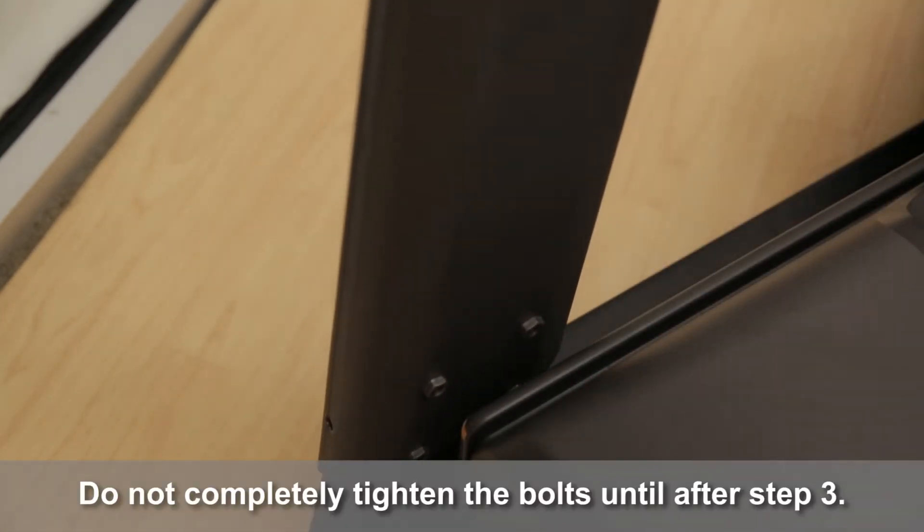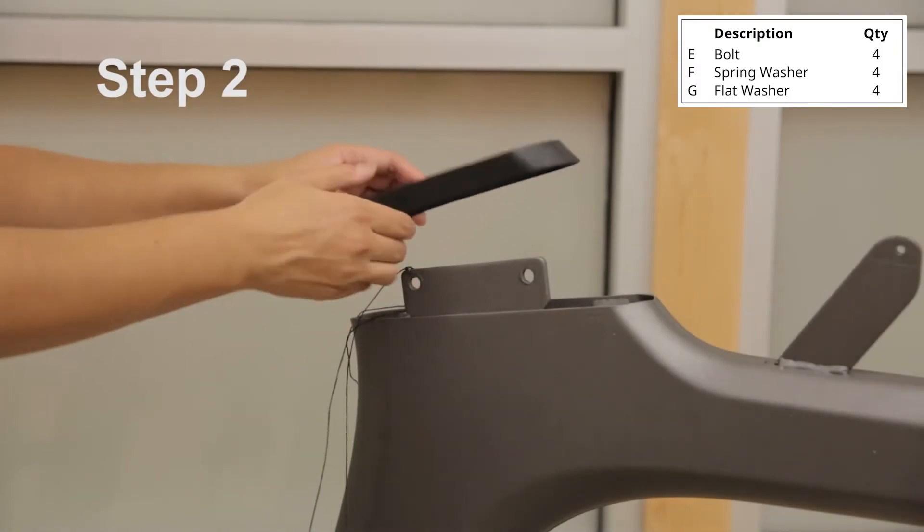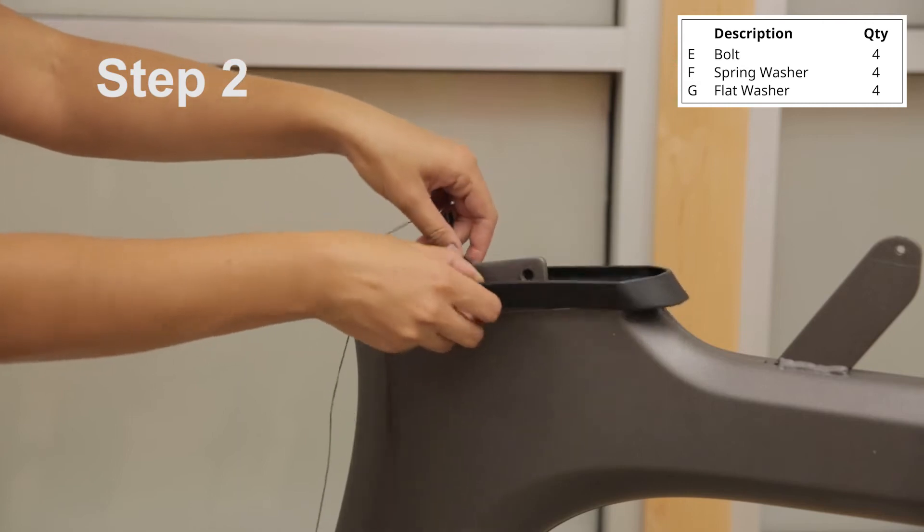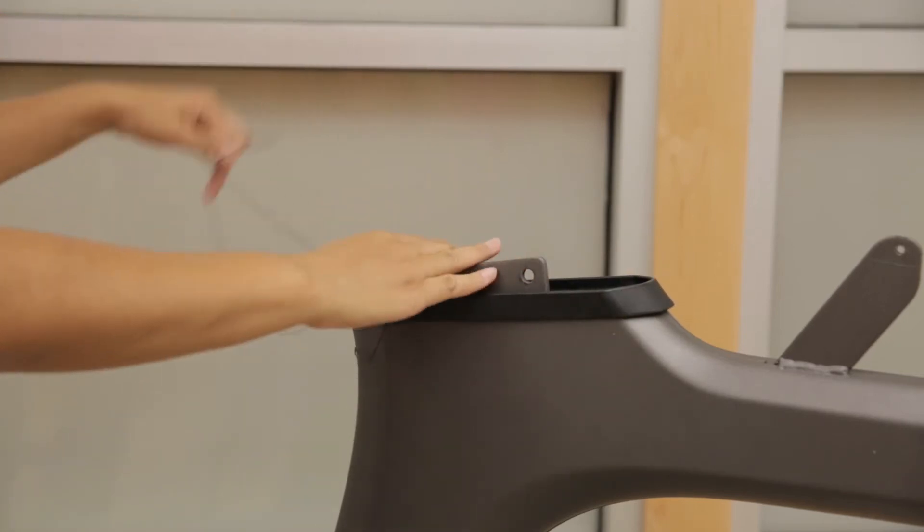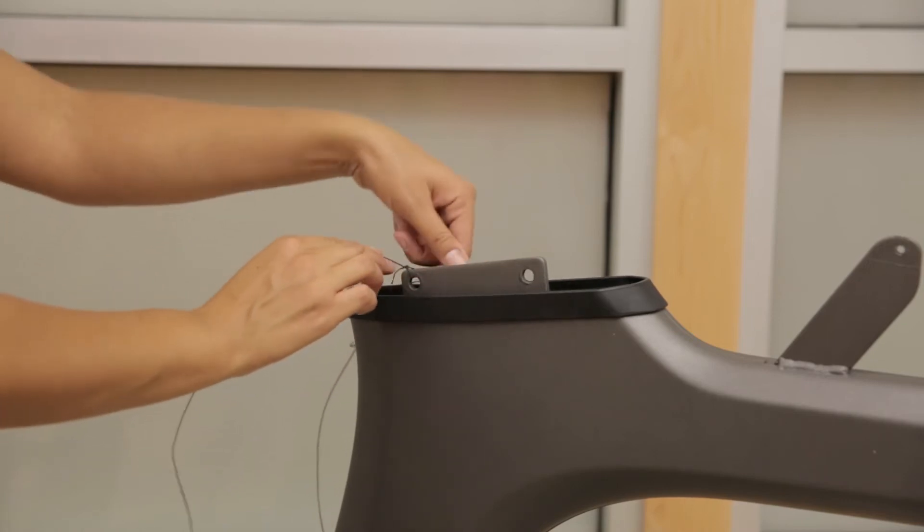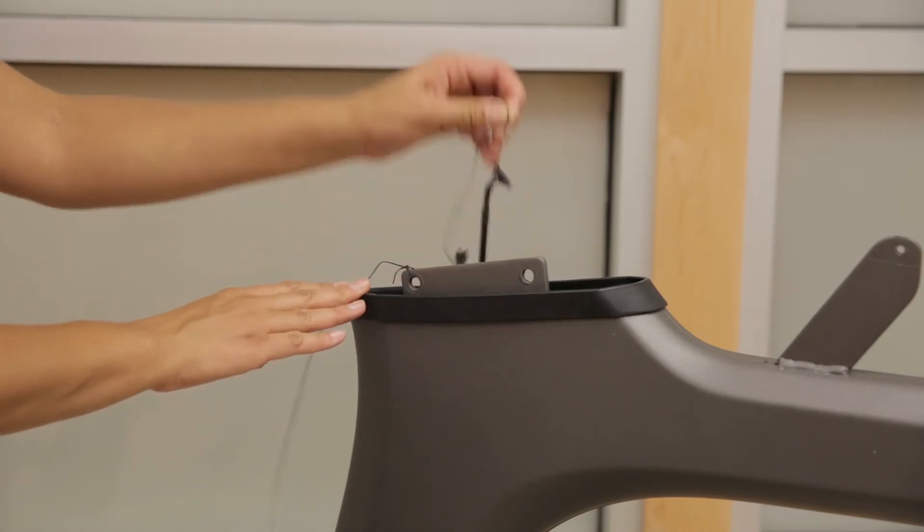Attach the bolts at the base of the console mast. Set the console mast boots in place, and then carefully pull the lead wire at the top of the right console mast until the console cable reaches the top of the mast.